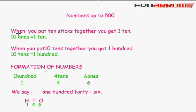We take example of sticks. When you put 10 sticks together, you get 1 ten. So, 10 ones is equal to 1 ten. When you put 10 tens together, you get 100. So, 10 tens is equal to 100.